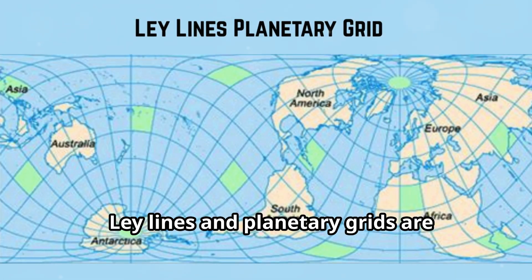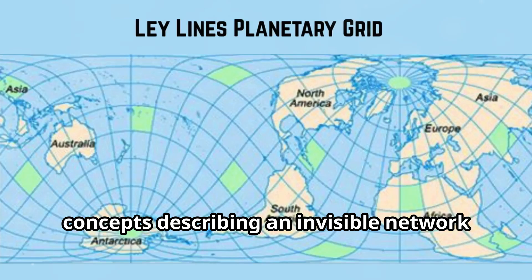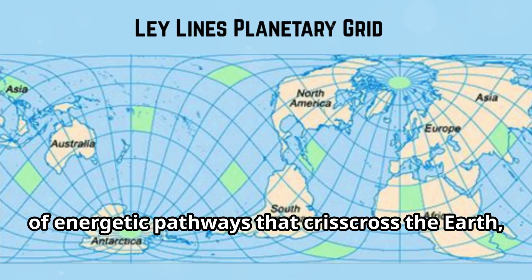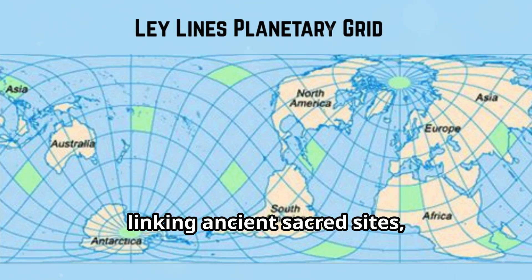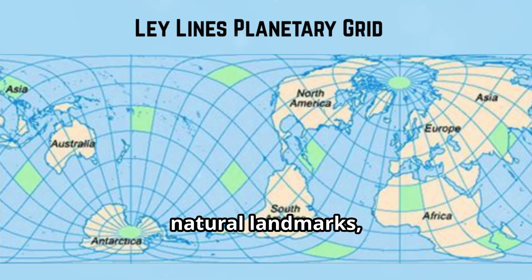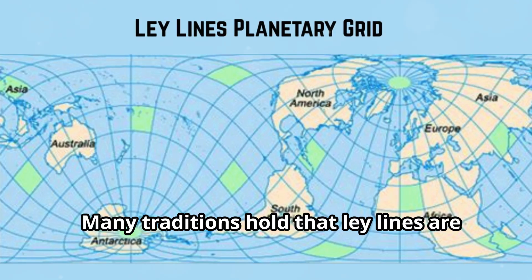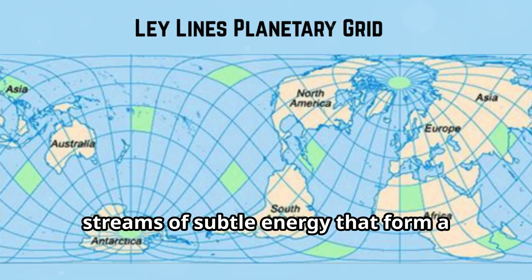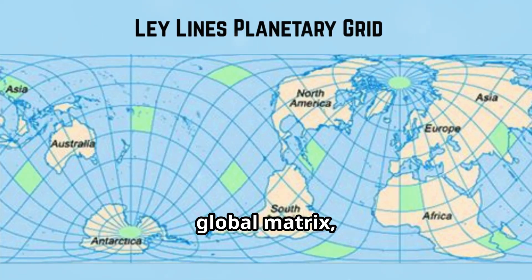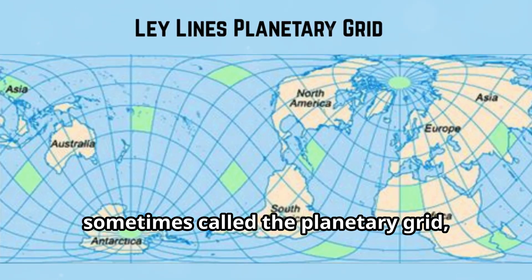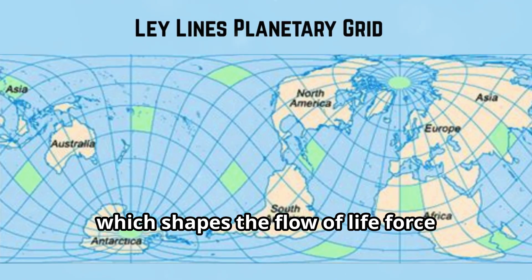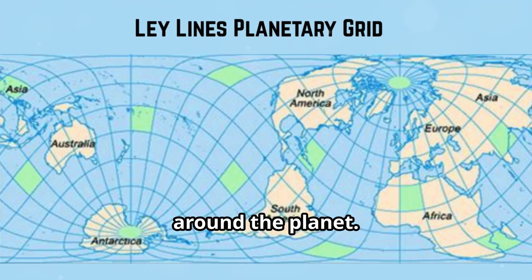Ley lines and planetary grids are concepts describing an invisible network of energetic pathways that crisscross the Earth, linking ancient sacred sites, natural landmarks, and power points. Many traditions hold that ley lines are streams of subtle energy that form a global matrix, sometimes called the planetary grid, which shapes the flow of life force around the planet.